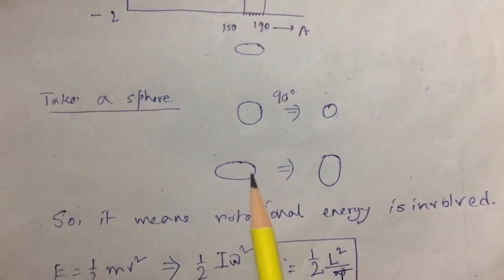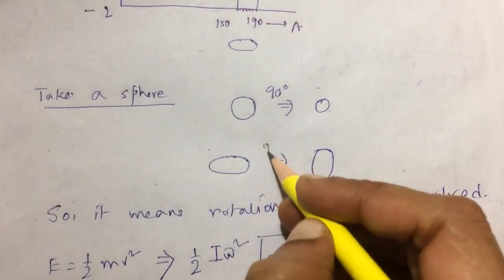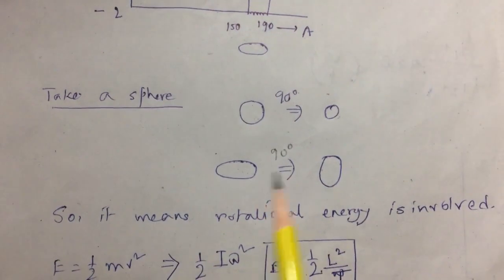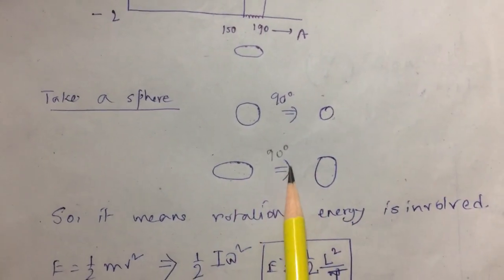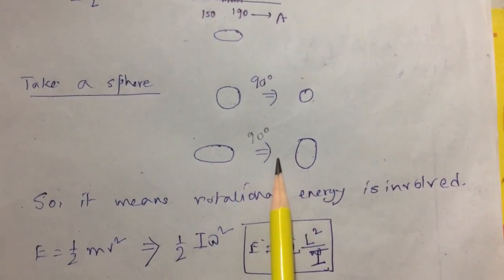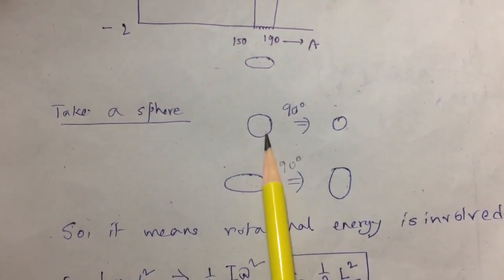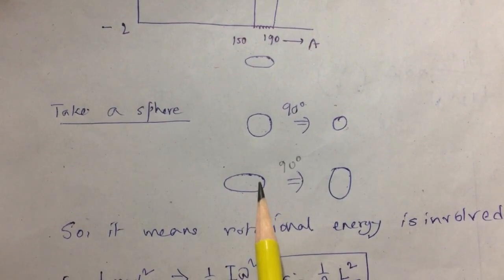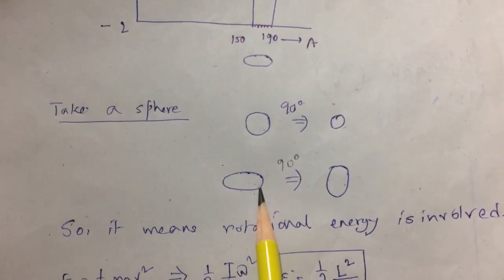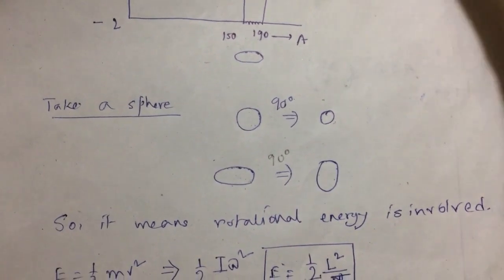But if we rotate this kind of shape by 90 degrees again, it will come like this. So rotation is very significant in case of this shape. Here the rotation does not have any effect, but here the rotation effect is very predominant.